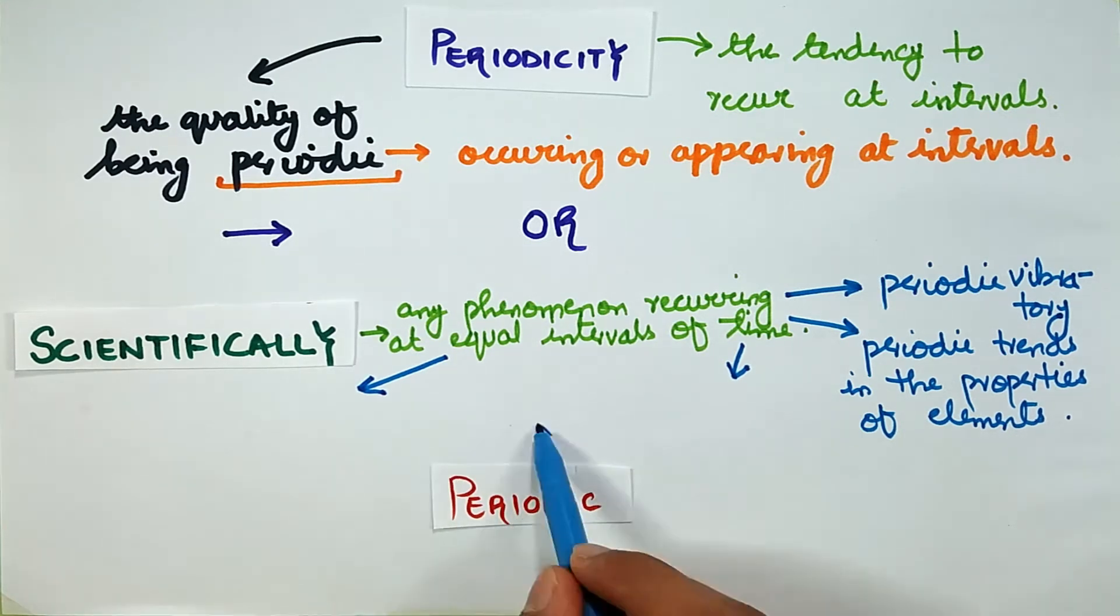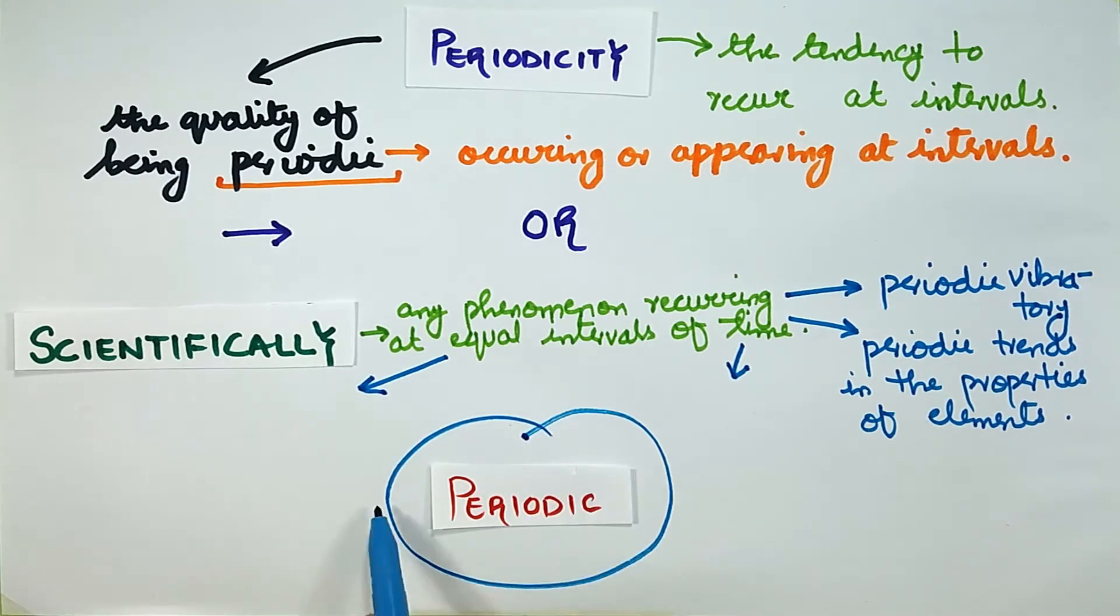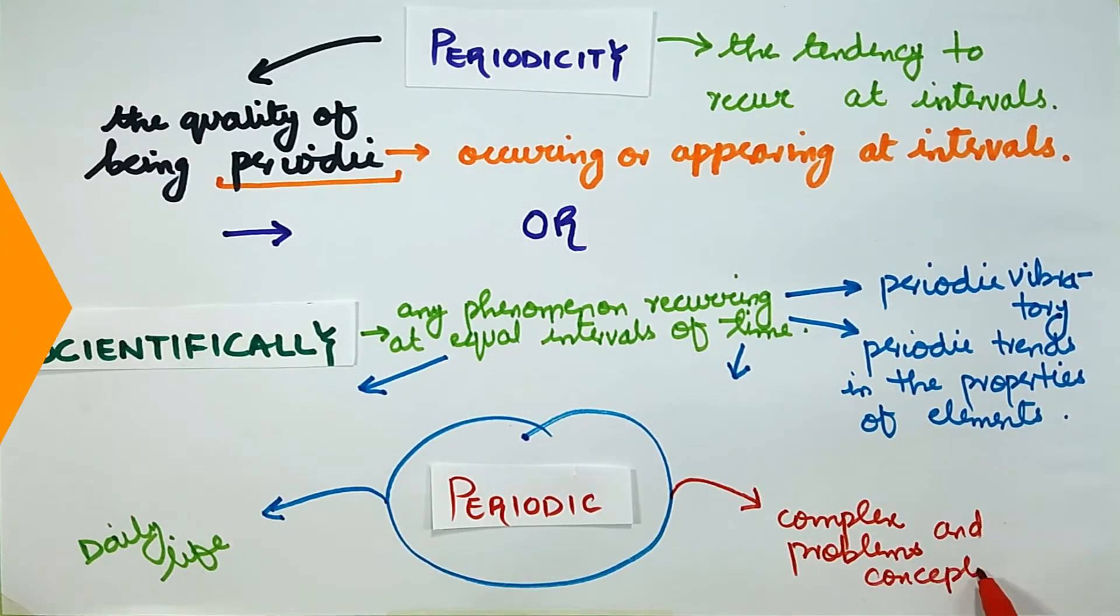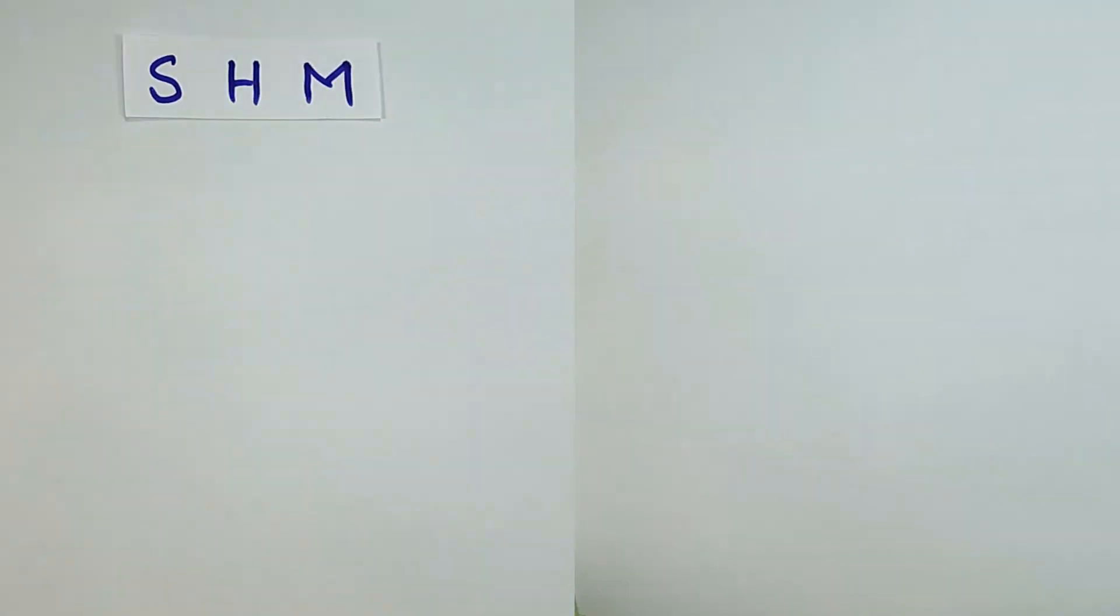Periodic is a precise word with vast uses ranging from our daily life actions to complex problems in nature. Let's take two examples.